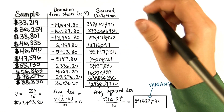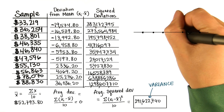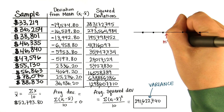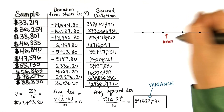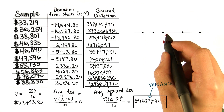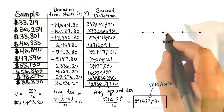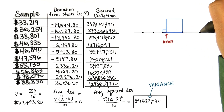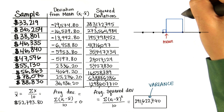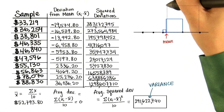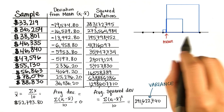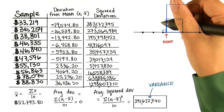Let's visualize what we did here. We have a bunch of data values and we found the mean — let's say it's here. Then we found the distance between each value and the mean, and then squared them. This is essentially the area of every square whose side length is the distance between each value and the mean.